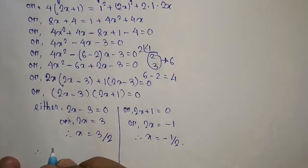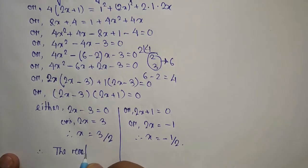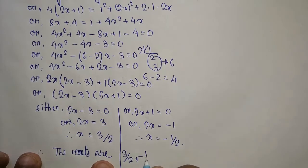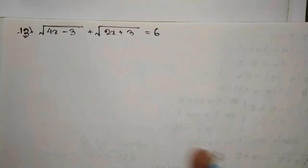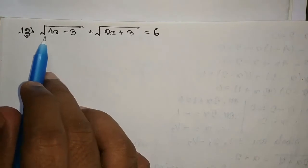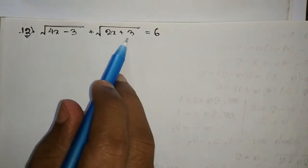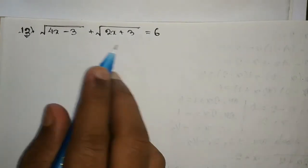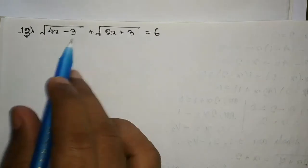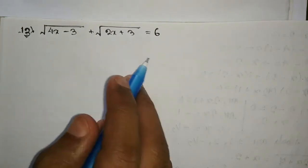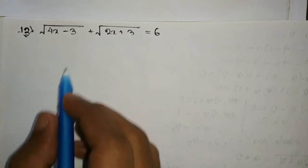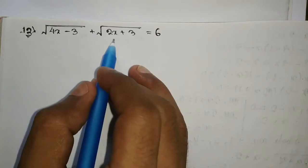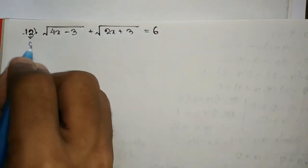Therefore the roots are 3/2 and minus 1/2. In this next question we have √(4x minus 3) plus √(2x + 3) equal to 6. We cannot square directly because squaring gives a 2ab term that is difficult to calculate. So first, one of the root terms should be transferred to the other side.